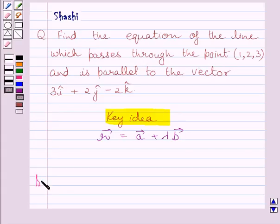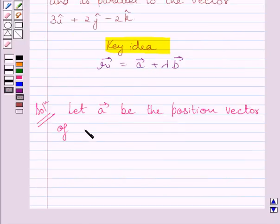Let us now start with the solution. We are given that the line passes through the point (1, 2, 3). Let us assume that a vector be the position vector of this given point.